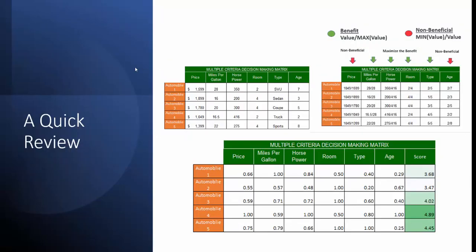So let's do a quick review. We had multiple criteria that spanned across five different options of automobile. Those options were price, miles per gallon, horsepower, room, type, and age.